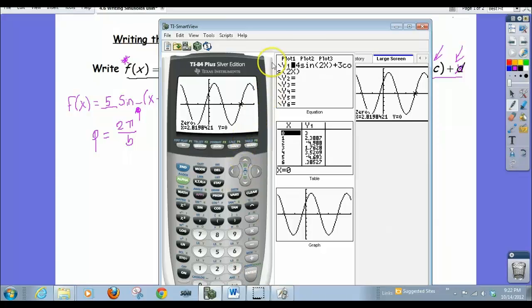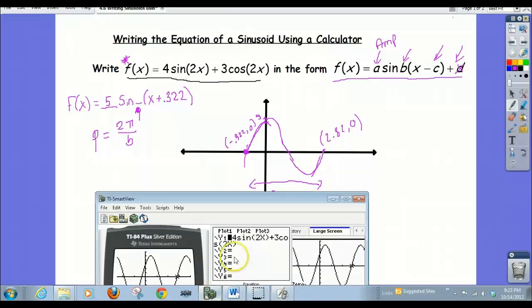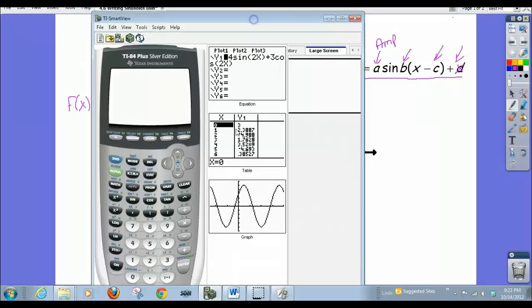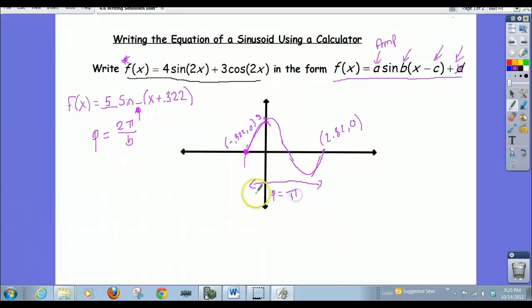Two point eight, two. Two point eight, two. So that's two point eight, two, zero. So if I want the period, I need to do two point eight, two minus negative point three, two, two. That's this distance. Right? The period is that distance. So to get that distance, we need to subtract. Two point eight, two minus negative point three, two, two. And you'll notice you get three point one, four, two. Now, we rounded a little bit and that should look suspiciously close to a number we know. And I hope you guys realize that that is just the number pi. Okay? So B is pi.